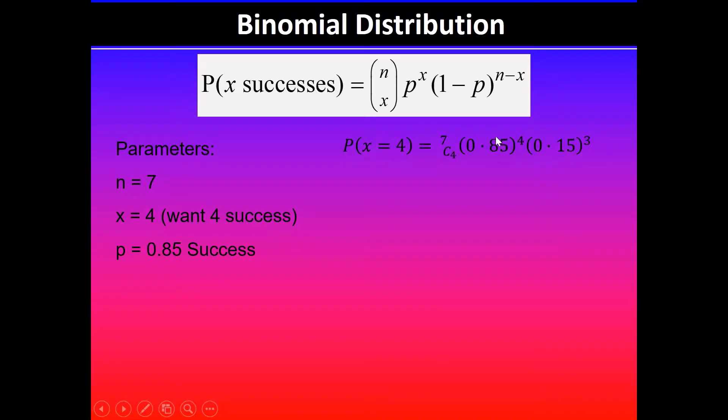And then 0.15. How I got 0.15 is 1 minus 0.85, because 0.85 is success, so this one is failure. So failure is 15%, raised to the power of n minus x. So 7 minus 4 is 3. And then 7 combination 4 is equal to 35.